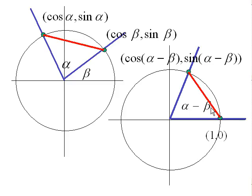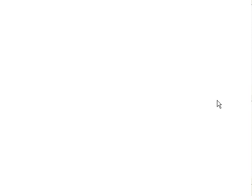This chord matches this chord — this length is the same as this length. Those lengths come from the distance formula, point to point, using change in x squared plus change in y squared. On the left circle: cosine alpha minus cosine beta is the difference in x-coordinates, squared, and sine alpha minus sine beta is the difference in y-coordinates, squared. On the right circle: cosine of (alpha minus beta) minus 1 is the difference in x-coordinates, and sine of (alpha minus beta) minus 0 is the difference in y-coordinates.